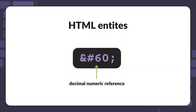Another type of character reference is the decimal numeric reference. Here is an example of using the decimal numeric reference for the less-than symbol. This character reference starts with an ampersand sign and hash symbol, followed by one or more decimal digits, followed by a semicolon.